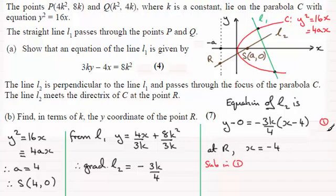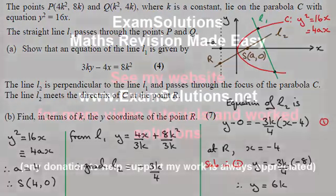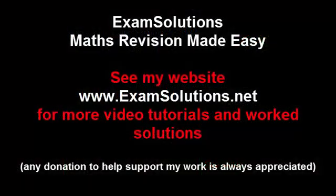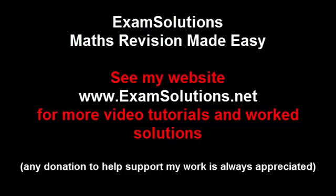And if we do that, then we have got y equals minus 3k over 4 multiplied with minus 4 minus another 4, so that's minus 8. And that means that therefore the y-coordinate of R is going to be equal to 6k. And there we go.